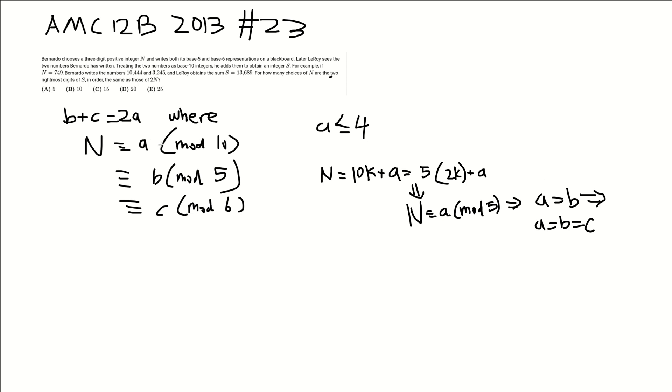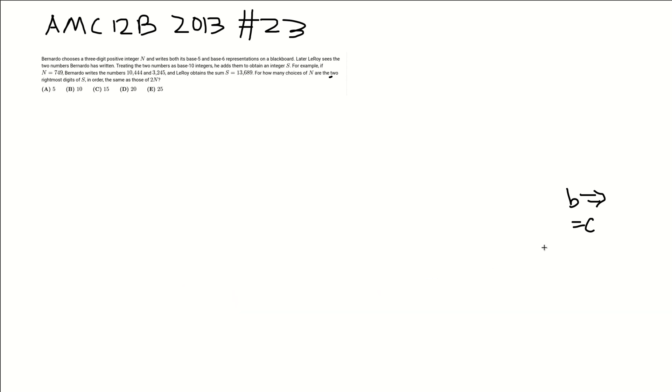Now if n is congruent to a mod 10, mod 5, and mod 6, that means that n is congruent to a mod the LCM of 10, 5, and 6. So it is congruent to a mod 30, where a is 0, 1, 2, 3, or 4. So let me erase this and write that up here. So n is congruent to 0, 1, 2, 3, or 4 mod 30.